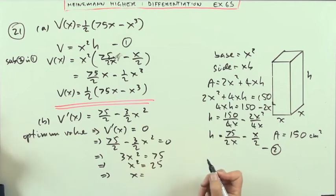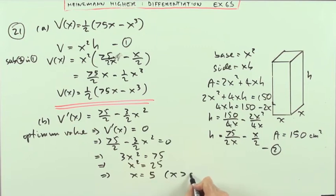So x should be the square root of 25, which is plus or minus 5, which is just 5. But not the negative because I know that x has to be greater than 0. So something happens when x is 5.